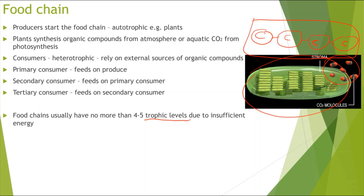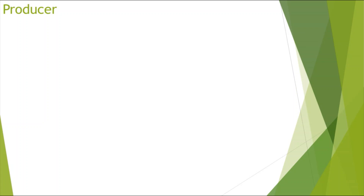A trophic level is the step from, say, primary to secondary consumer. We tend to have no more than four to five trophic levels due to insufficient energy at the end, because of the energy losses we will look at later.